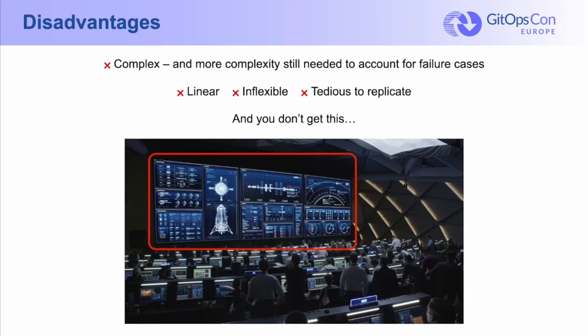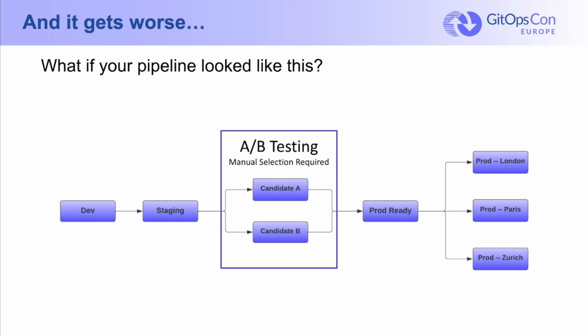Last and certainly not least, there's no mission control center for this. There is no single place to go see what is running where. And remember that we deliberately started out with a pipeline that wasn't too complex. What if your pipeline looks like this one? Here we've not only added additional stages, but we've also added two parallel stages where we conduct some A/B testing. When that testing is complete, whatever process we use needs to account for a user manually selecting one of two candidates to progress to the next stage.